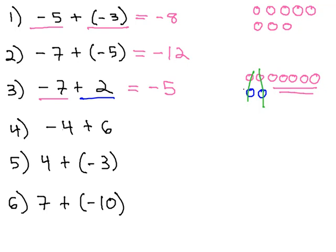As you can see, the pairs subtract out to a zero, and we're just left with whatever was the bigger number. The bigger number was seven, so we were left over with negatives after two of them were subtracted away.